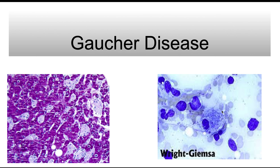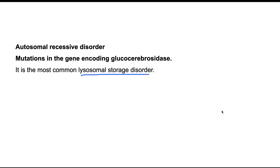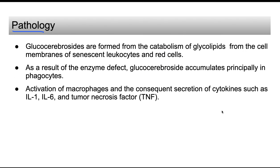In this video we will discuss Gaucher's disease. It is a lysosomal storage disease — the most common lysosomal storage disease. It is an autosomal recessive disorder in which there are mutations in the gene encoding glucocerebrosidase. Since glucocerebrosidase is responsible for the breakdown of glucocerebrosides, its deficiency causes them to be deposited in the body in various cells.